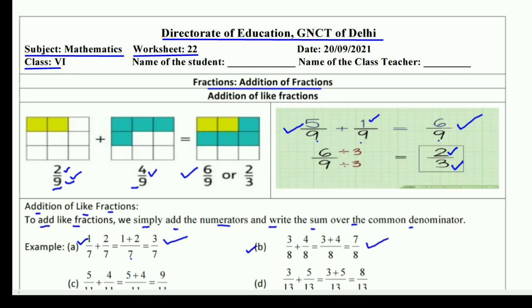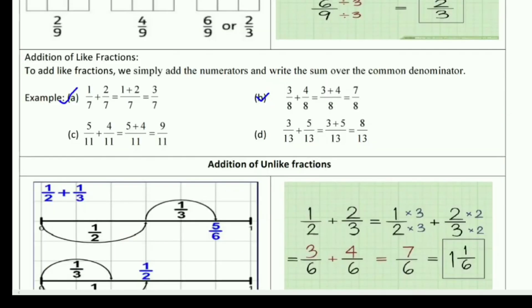It's very easy, just a two-step question. Learn the steps properly. Part c is 5/11 plus 4/11. Common denominator is 11, add the numerators: 5 plus 4 equals 9, answer is 9/11. Part d is 3/13 plus 5/13. Denominator is 13, add the numerators: 3 plus 5 equals 8/13 is the answer.